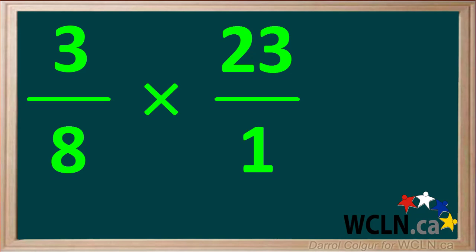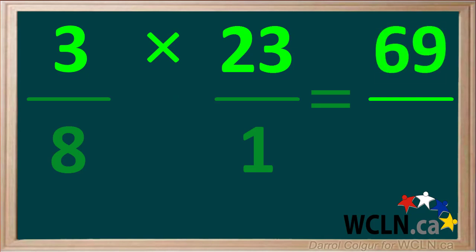So to find the answer, we must multiply 3 eighths times 23 over 1. We multiply the numerators, 3 times 23, which gives us 69, and we multiply the denominators, 8 times 1, which gives us 8. So multiplying these two fractions gives us 69 over 8.